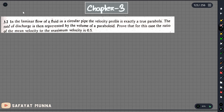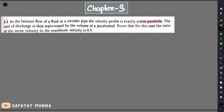In a laminar flow, a fluid in a circular pipe, the velocity profile is exactly a true parabola. This means the velocity profile is of a parabolic nature. The rate of discharge is then represented by a volume of paraboloid, which is the same as the 2D plane paraboloid. The ratio of the mean velocity to the maximum velocity is 0.5.